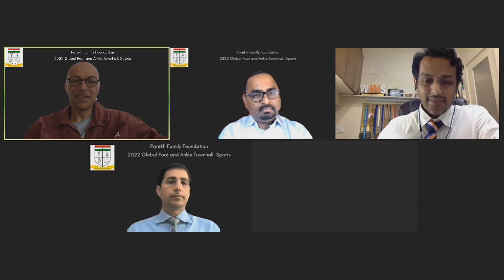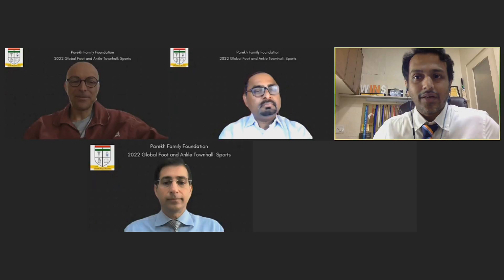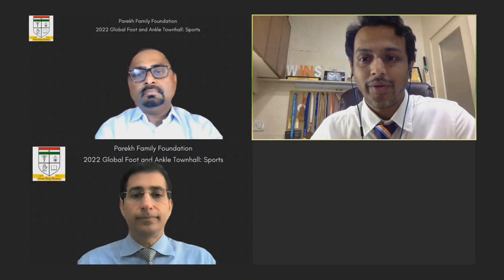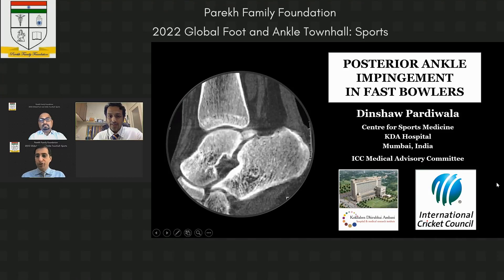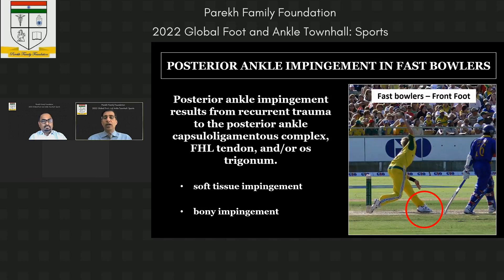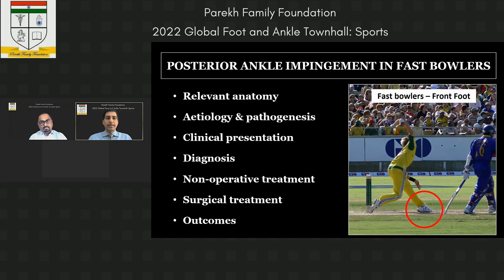Thank you, James. Our next speaker, Dr. Dinshaw Pardiwala, Director of Sports Medicine at Kokilaben Dhirubhai Ambani Hospital in Mumbai, will cover posterior ankle impingement in fast bowlers. Posterior ankle impingement results from recurrent trauma to the posterior ankle capsular ligamentous complex, the flexor hallucis longus tendon, and/or the os trigonum. It can be either soft tissue or bony impingement, and fast bowlers — especially on their front foot — are particularly prone.